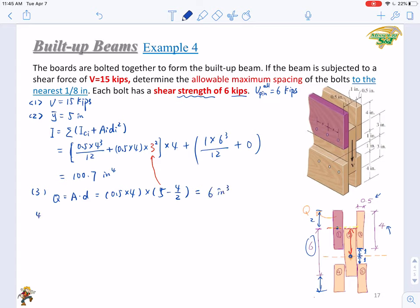And step 4, we're calculating the shear flow. That is VQ over I. You have the V that is 15 kips times 6 over 100.7. We got 894 pound per inch.